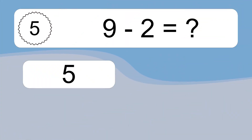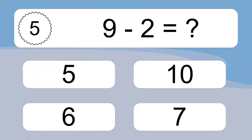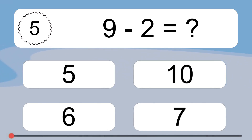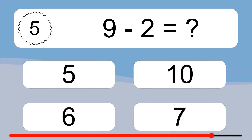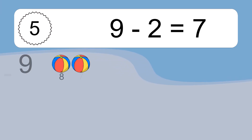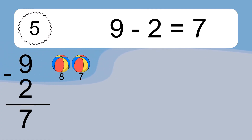9 minus 2 equals what? 9 minus 2 equals 7. Let's count it: 8, 7.